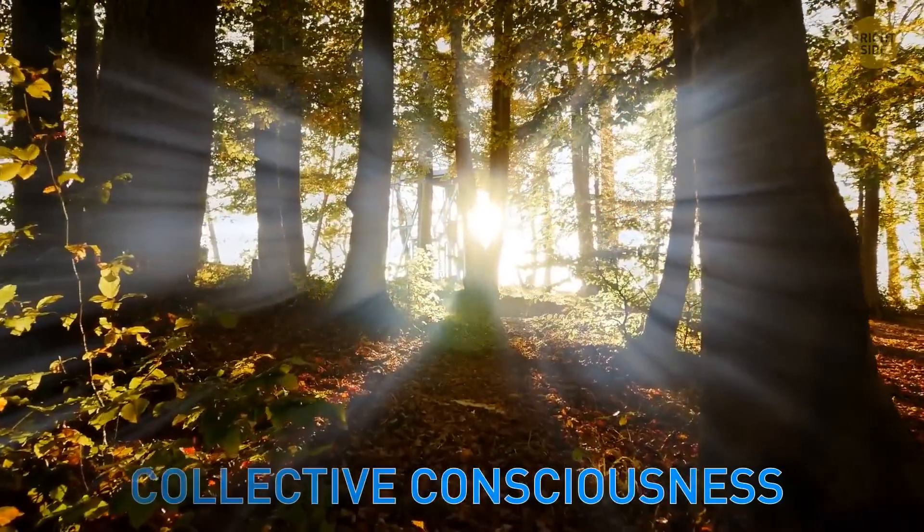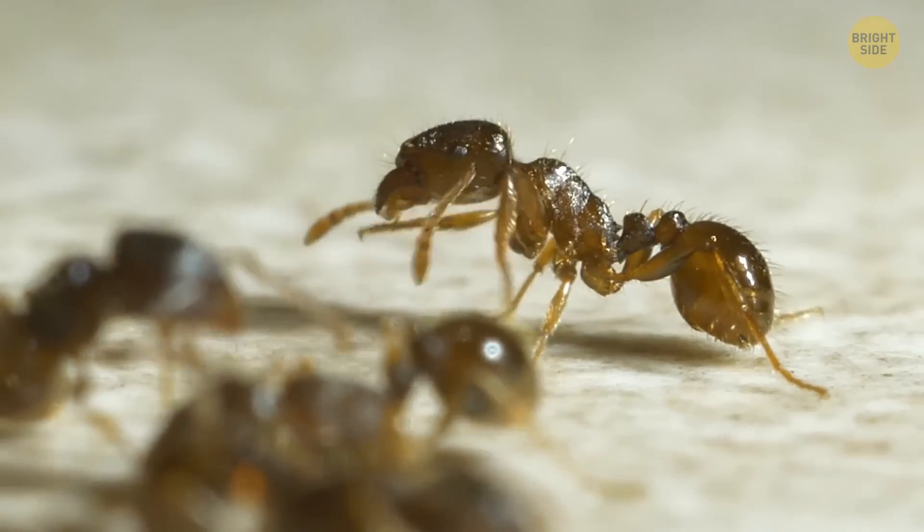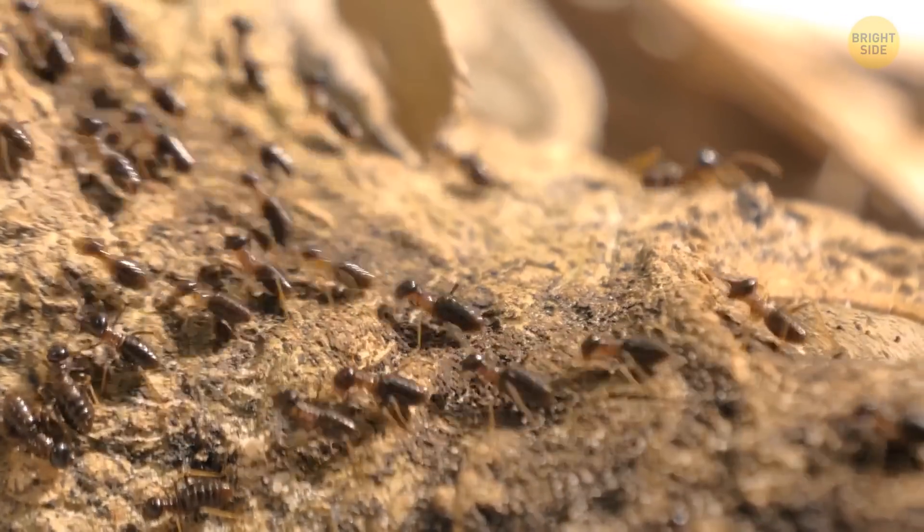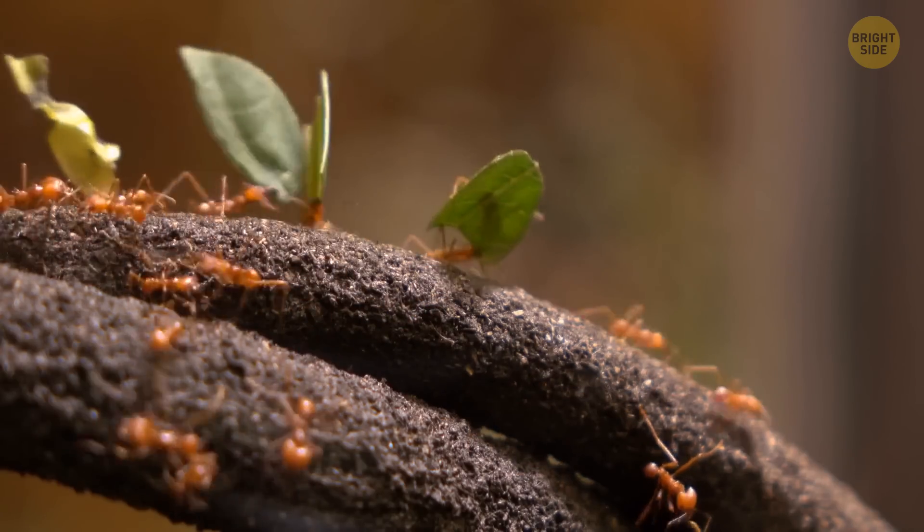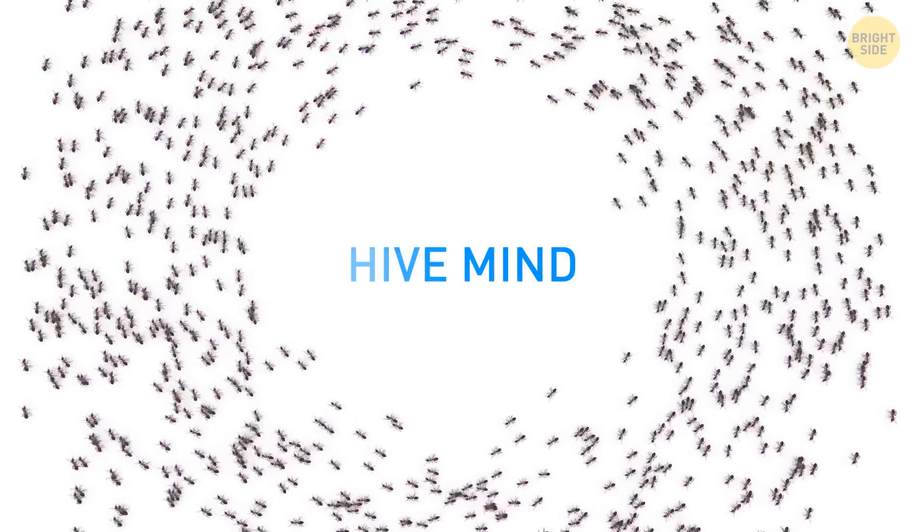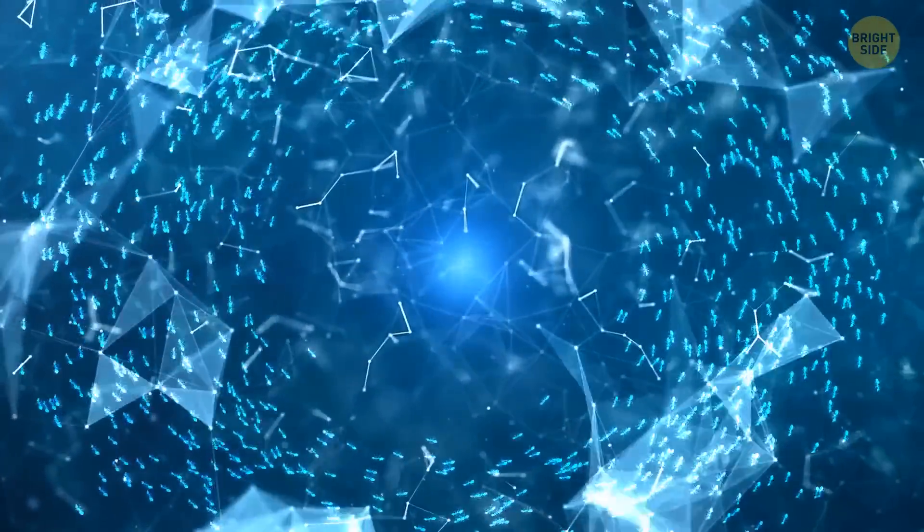There are a couple of exceptions to this rule. For example, ants. They may not be the brightest creatures on the planet, but when they come together in colonies, they can achieve amazing things. Like gathering food that's way bigger than them, building nests, raising young, and even farming. In fact, they act like a superorganism, called a hive mind, where every ant works together towards a common goal.